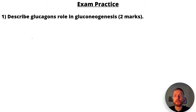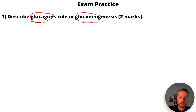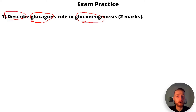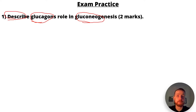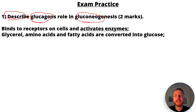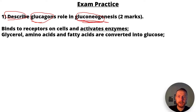Let's go through some exam practice. Question one: describe glucagon's role in gluconeogenesis — a two-mark described question. First mark: glucagon binds to receptors and activates enzymes, as seen in the second messenger model. Second mark: glycerol, amino acids, and fatty acids are converted into glucose — that's what gluconeogenesis actually means.